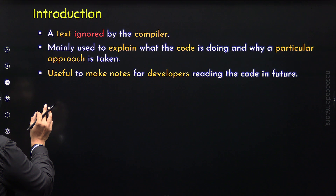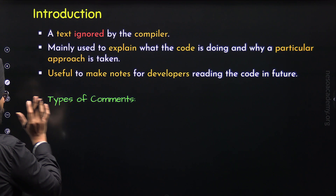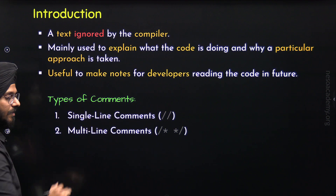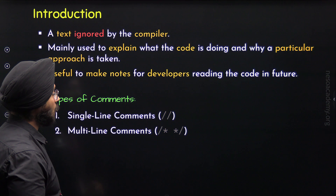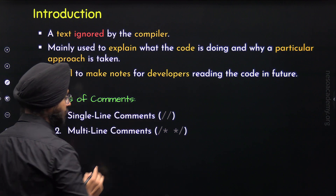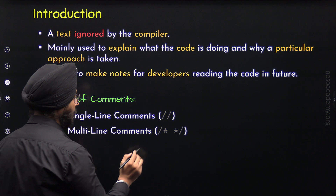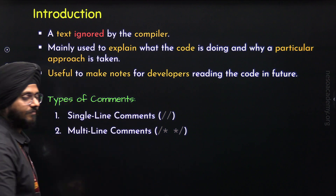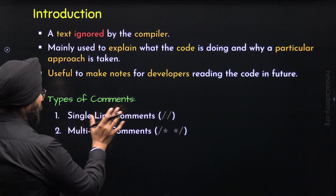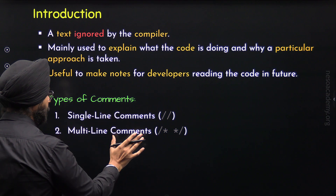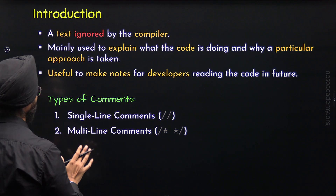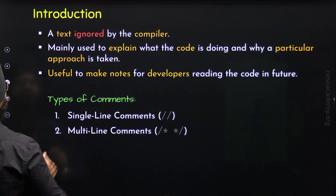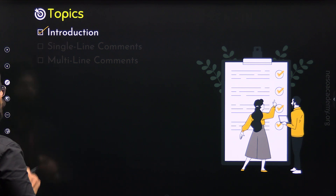There are two types of comments in C++. We have single line comments and we have multi-line comments. A single line comment is added with the help of two forward slashes, and a multi-line comment is added with the help of slash asterisk and asterisk slash. We will understand both types properly. For now, we have understood what a comment is and why they are useful, so we are done with the first topic.